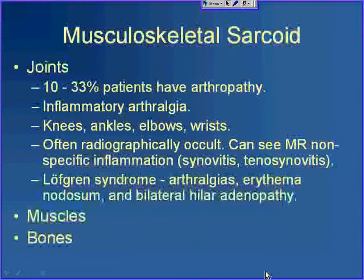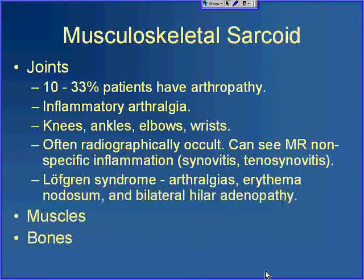Musculoskeletal sarcoid can affect the joints, muscles, or bones. Up to one-third of patients will have an arthritis with sarcoid — generally an inflammatory arthritis affecting knees, ankles, elbows, and wrists most commonly. Usually we don't see findings of sarcoid in the joints on imaging, but MR can show nonspecific signs of inflammation: enhancing synovium, synovitis, tenosynovitis, or bursitis. There is Löfgren syndrome, which is sarcoid with arthralgias, erythema nodosum, and bilateral hilar adenopathy.